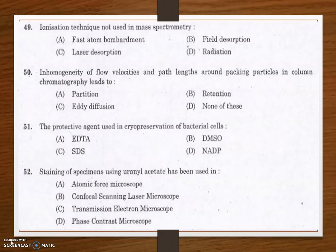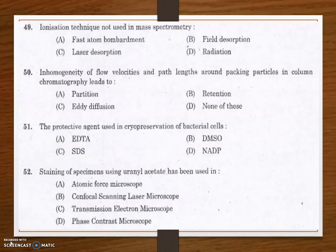Next question: the ionization technique not used in mass spectrometry. Options are fast atom bombardment, field desorption, laser desorption, and radiation. The answer is radiation. The other techniques — fast atom bombardment, field desorption, and laser desorption — are used in mass spectrometry. Radiation is not an ionization technique used in mass spectrometry.